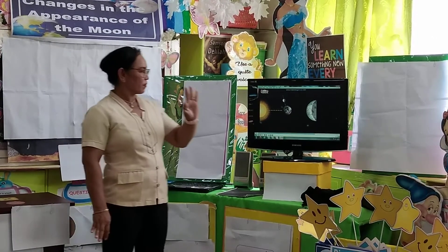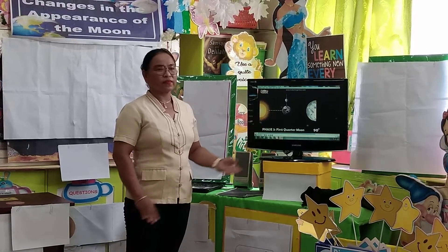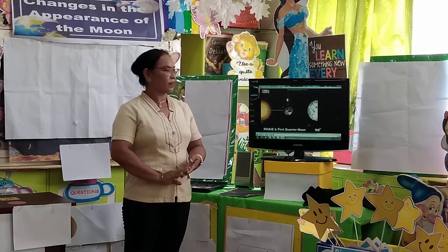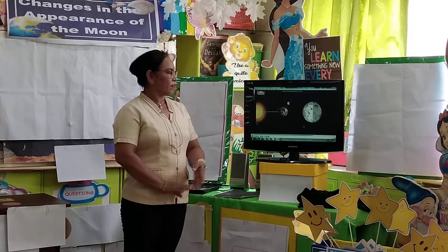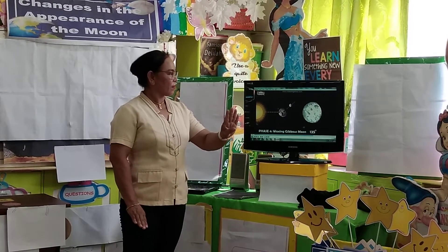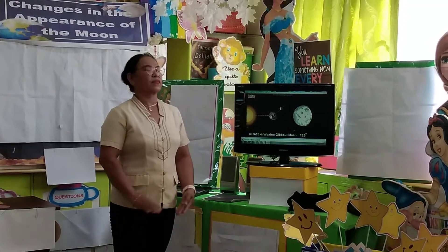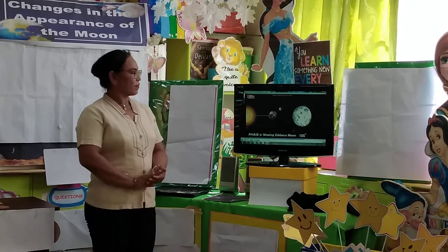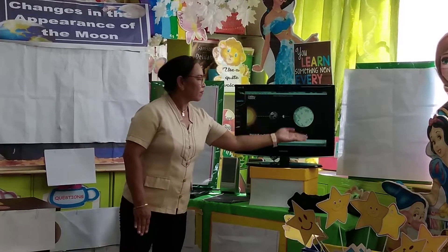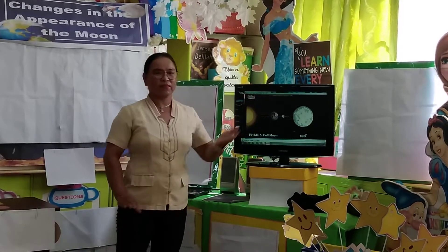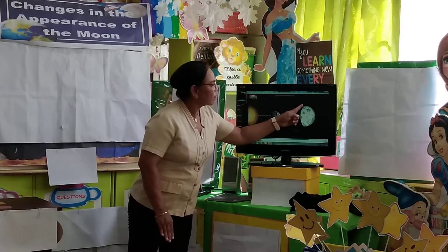Phase 3 is called the first quarter. In this phase, the moon appears half lit to us. Phase 4 is the waxing gibbous moon. In this phase, the moon appears more than half lit — the moon shows a hump. Phase 5 is the full moon, beautiful and poetic.